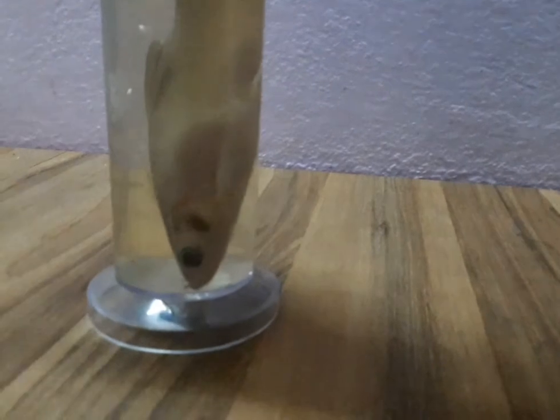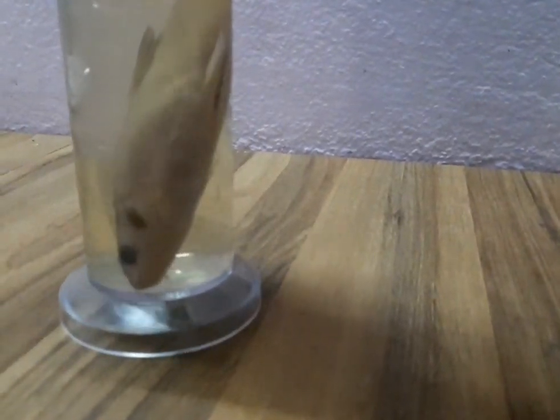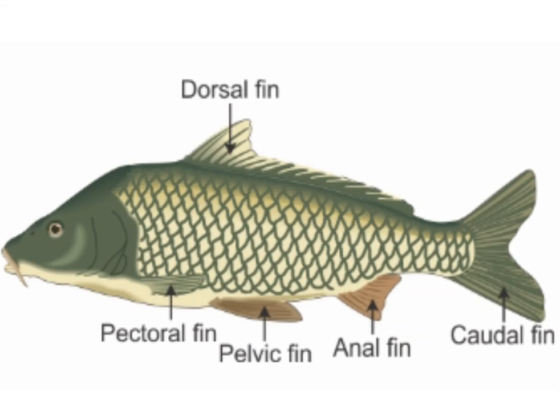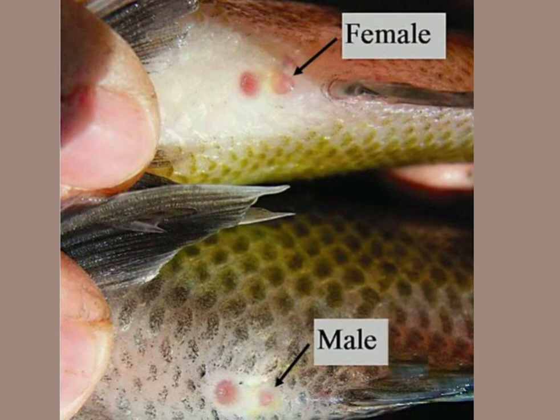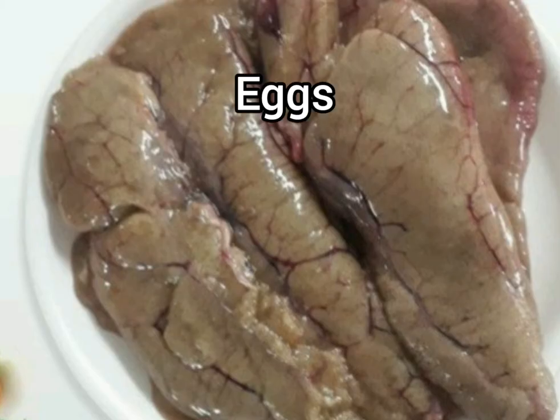Fins are present for locomotion. Three median unpaired fins are present: dorsal, anal and caudal. Two paired fins — pectoral and pelvic — are also present. Sexes are separate and males are without claspers, which are present in some other types of fishes. The females are oviparous, that is they lay eggs.